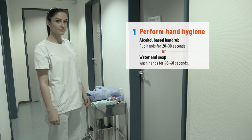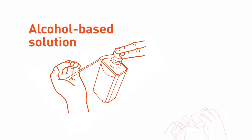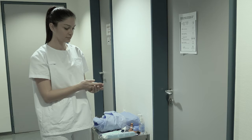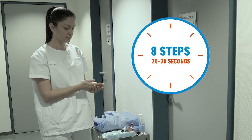Step one is to perform hand hygiene. You can clean your hands by rubbing them with an alcohol-based solution. It is the fastest and most effective method and better tolerated by your skin than other methods. Follow the WHO technique that ensures all surfaces of the hands are carefully covered by the product and will eliminate the microorganisms on your hands.